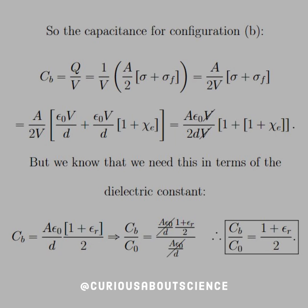Now, for the ratio, we divide the two capacitance, C_b over C naught, and we see again that A epsilon naught over d cancels out in both, leaving us with a ratio of 1 plus epsilon r over 2.